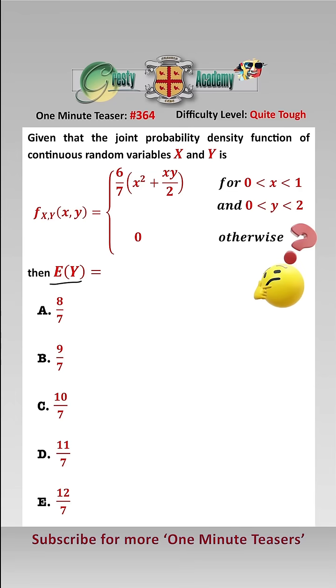To find the expected value of Y, the first thing we need to do is find the marginal probability density function of Y. To do that, we need to integrate over X, i.e., integrating from X equals 0 to 1.